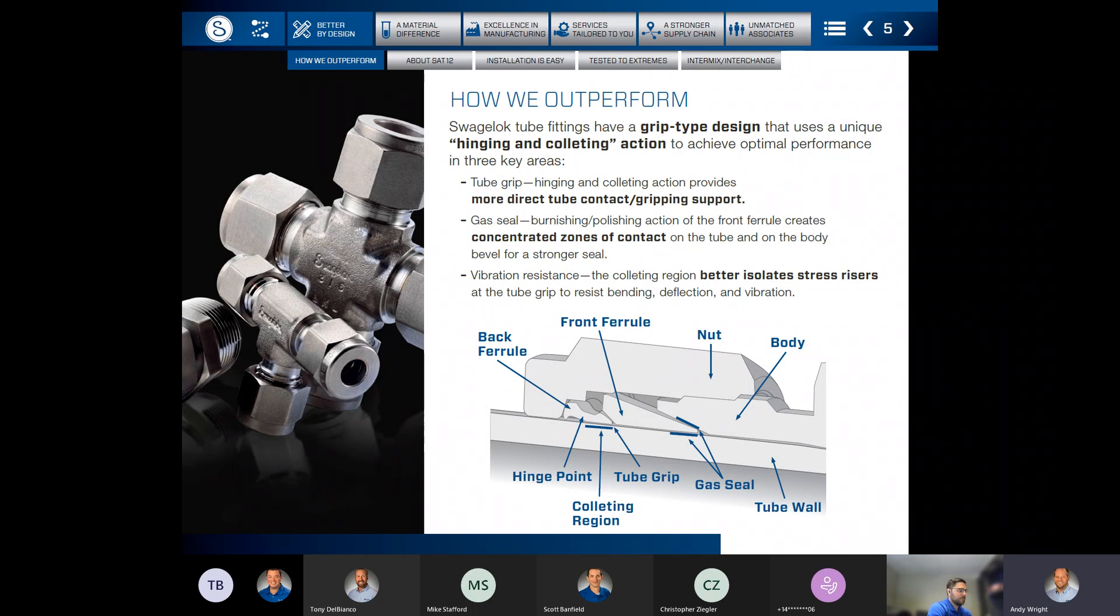So it isolates the stress risers that can be formed on the front ferrule. The front ferrule is going to do the gas seal, while the back ferrule, through the hinging and collating, is going to perform tube grip and vibration resistance.